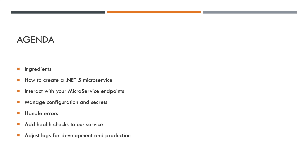We're going to first discuss the ingredients — what tools do we need in order to create that microservice. Then we're going to actually create that microservice, then we're going to see how we can interact with that service endpoint. Then we're going to be managing the configuration and secrets that the service is going to be relying on. Then we're going to discuss error handling and how we can make sure that everything runs smoothly even if the application fails. Then we're going to discuss how we can add health checks to make sure the service is running as it should. Finally, we're going to adjust the logs so we have a different version for development and a different version for production. As always, you'll find the source code in the description down below.